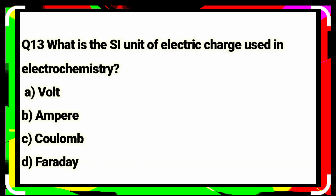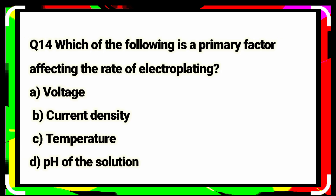Question number thirteen: what is the SI unit of electrical charge used in electrochemistry? Option C is the correct answer. Question number fourteen: which of the following is a primary factor affecting the rate of electroplating? Current density. Option B is the correct answer.